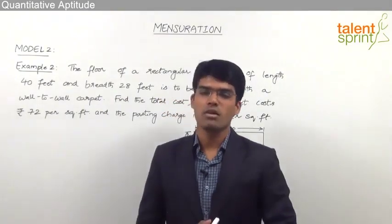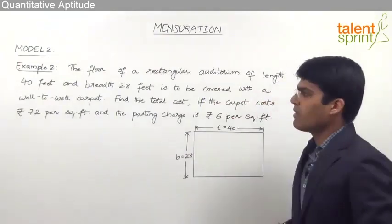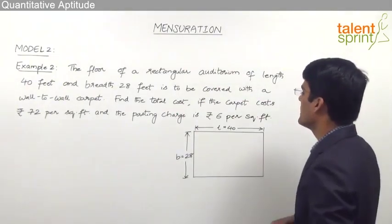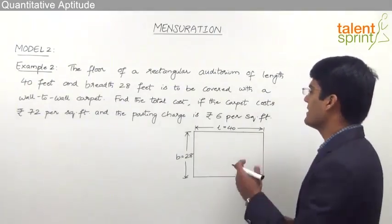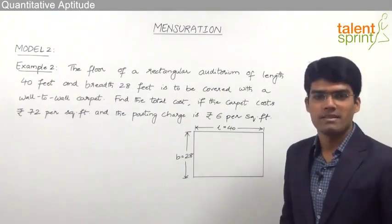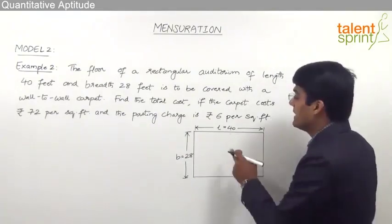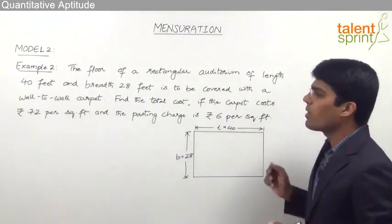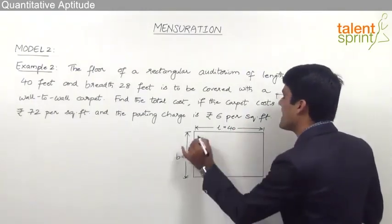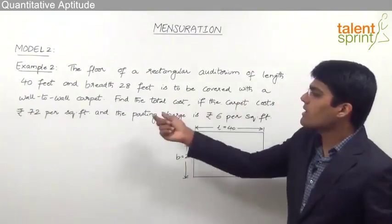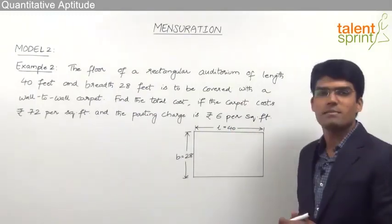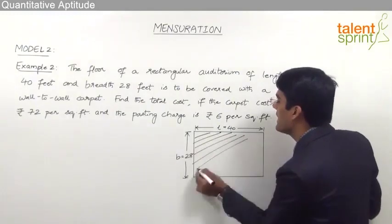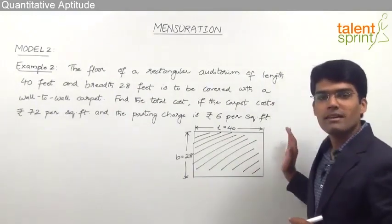Let us now take the second example. The floor of a rectangular auditorium of length 40 feet and breadth 28 feet is to be covered with a wall-to-wall carpet. Find the total cost if the carpet costs rupees 72 per square feet and the pasting charges are rupees 6 per square feet. When we cover the floor with a wall-to-wall carpet, we are working on the complete area of the rectangular floor.